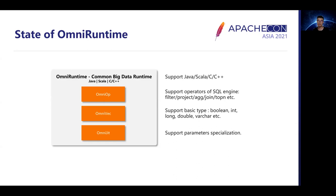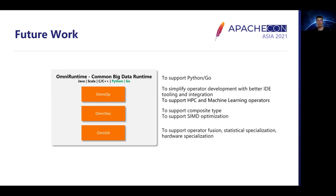Currently, Omni Runtime supports Java, Scala, C, and C++ bindings, and supports more than 10 operators of the Circle engine. It supports basic types such as Boolean, Int, Long, Double, and String. Omni JIT supports parameter specialization. In the next step, we will support Python and Go. We will also try to simplify operator development and implement HPC and machine learning operators. For Omni Vector, it will support compact types and same operator optimizations. Omni JIT will support operator fusion, statistical specialization, and hardware specialization.